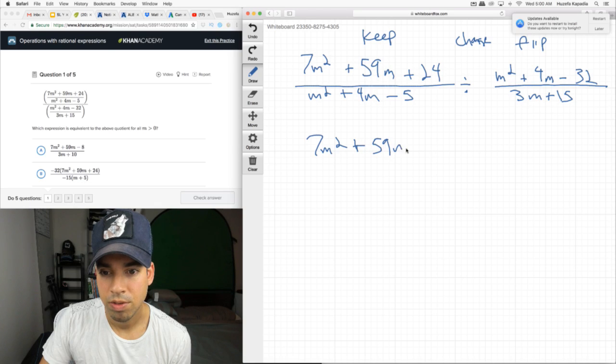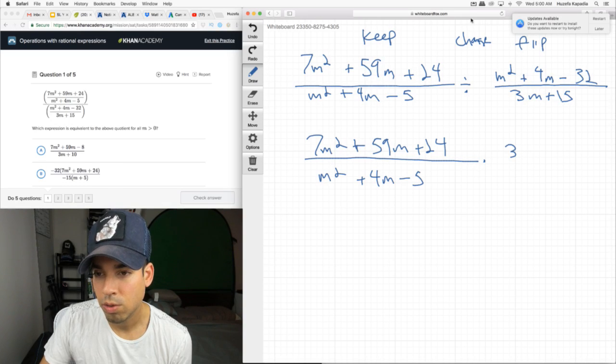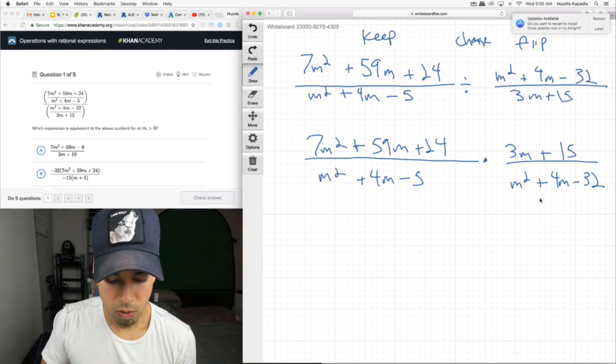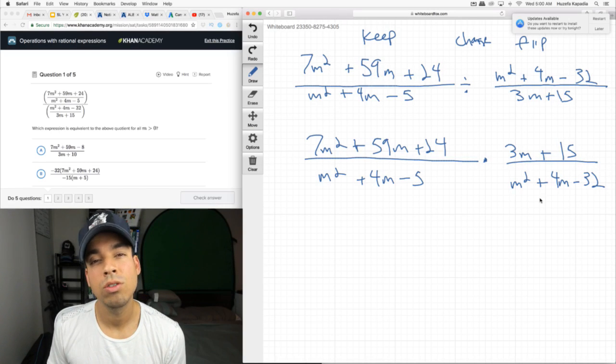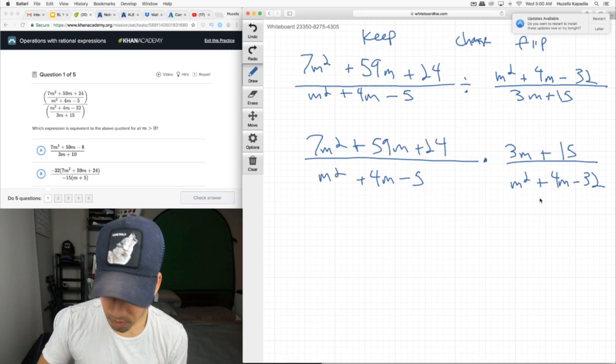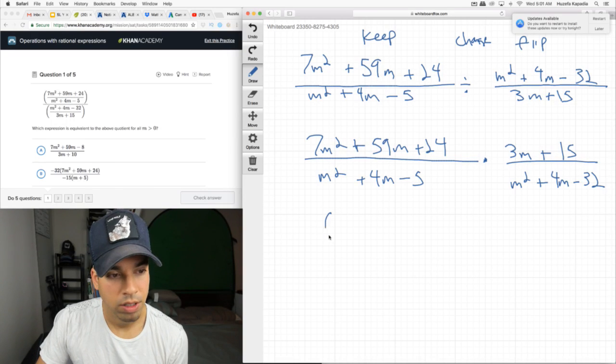This guy is going to stay the same right here. 7m squared plus 59m plus 24 over m squared plus 4m minus 5 times. Now, the reciprocal of this is, we're going to keep, we're going to change to multiplication. We're going to flip this to 3m plus 15 over m squared plus 4m minus 32. Now, what I say is, as a general matter, if you're not sure what to do at this point, and you see quadratics, just factor instinctually. Just factor and see what happens because these look factorable, so I'm going to factor.